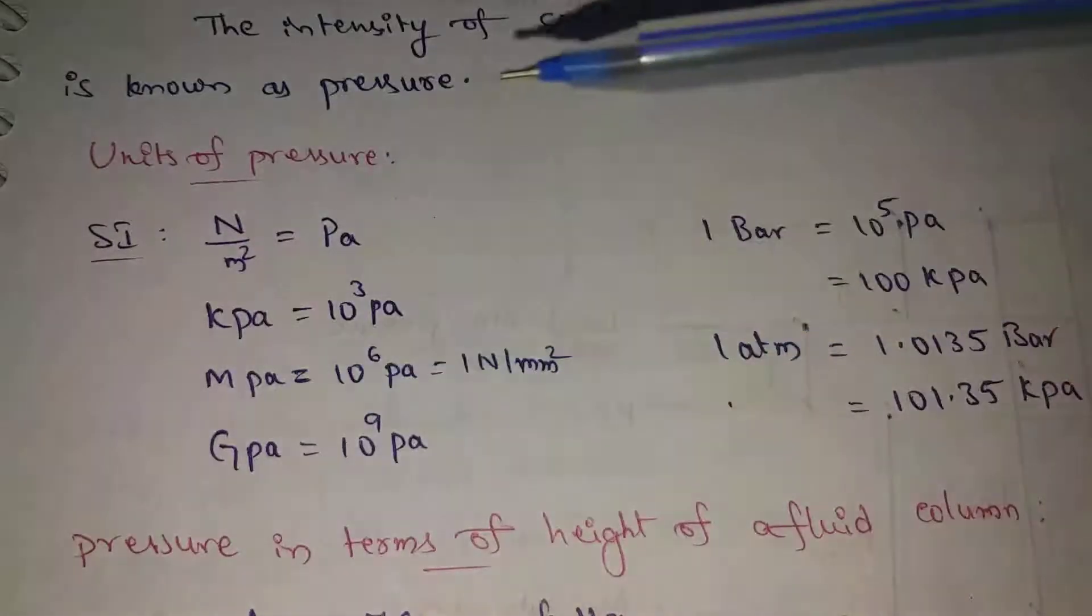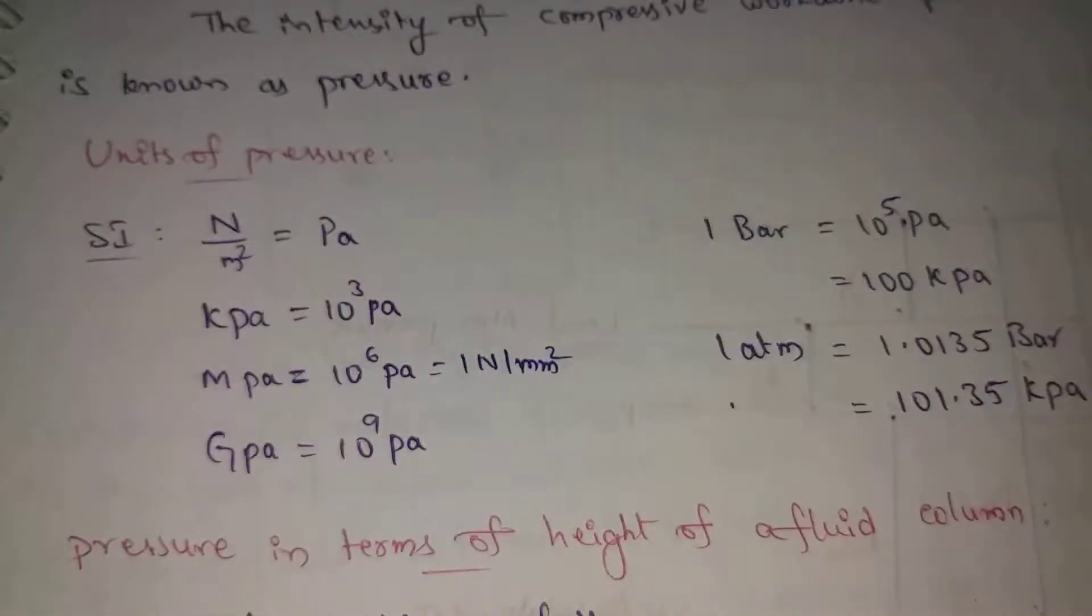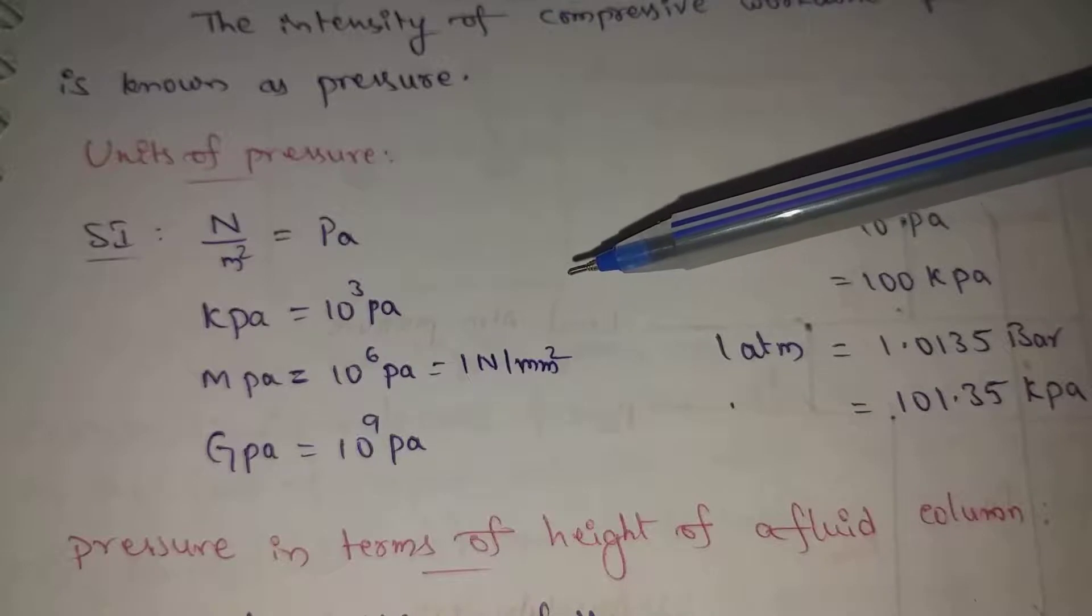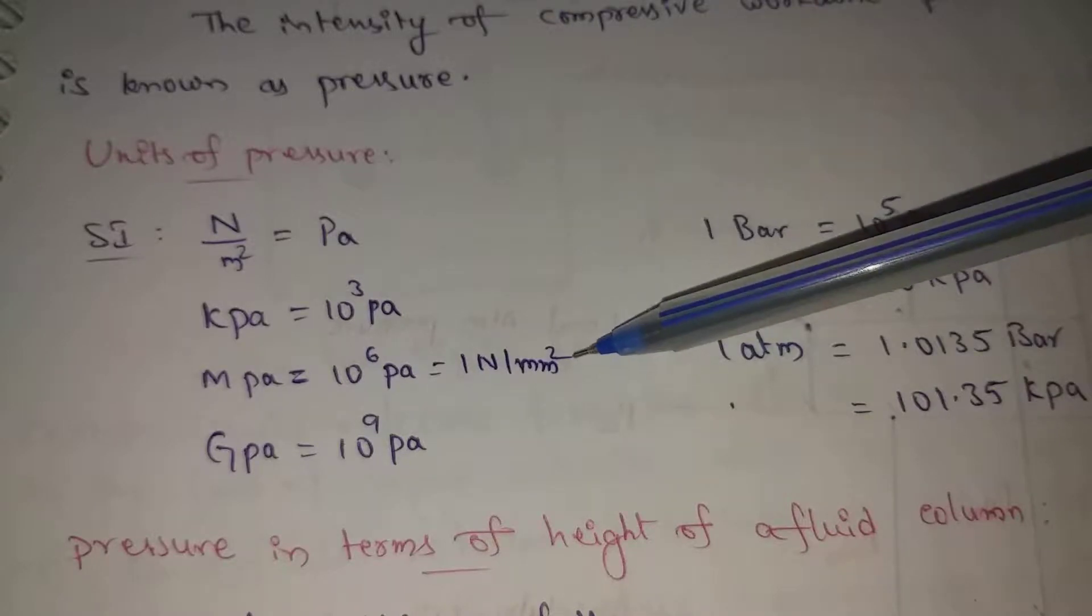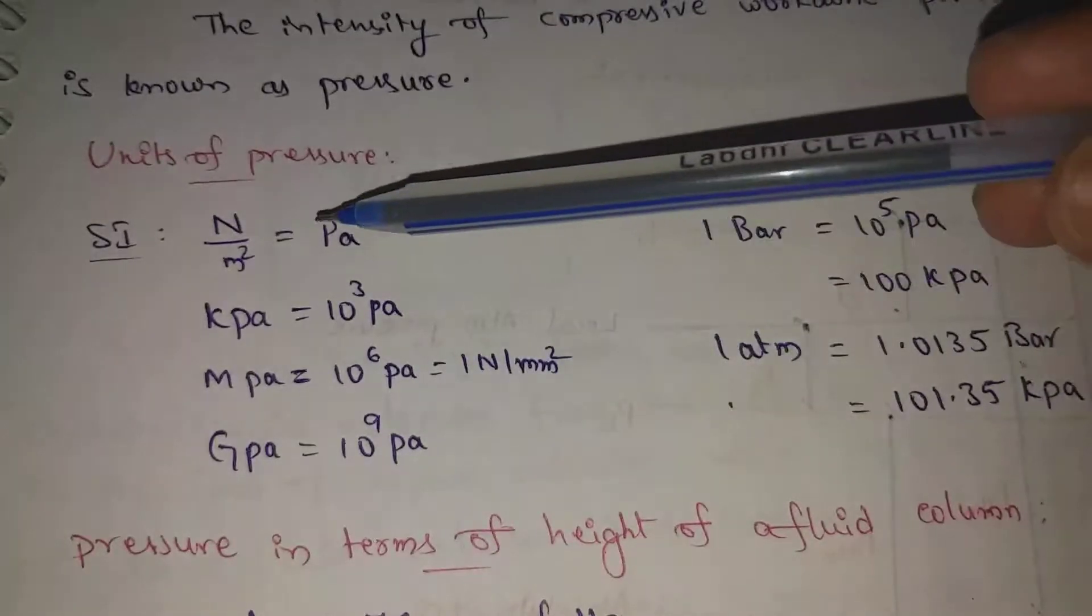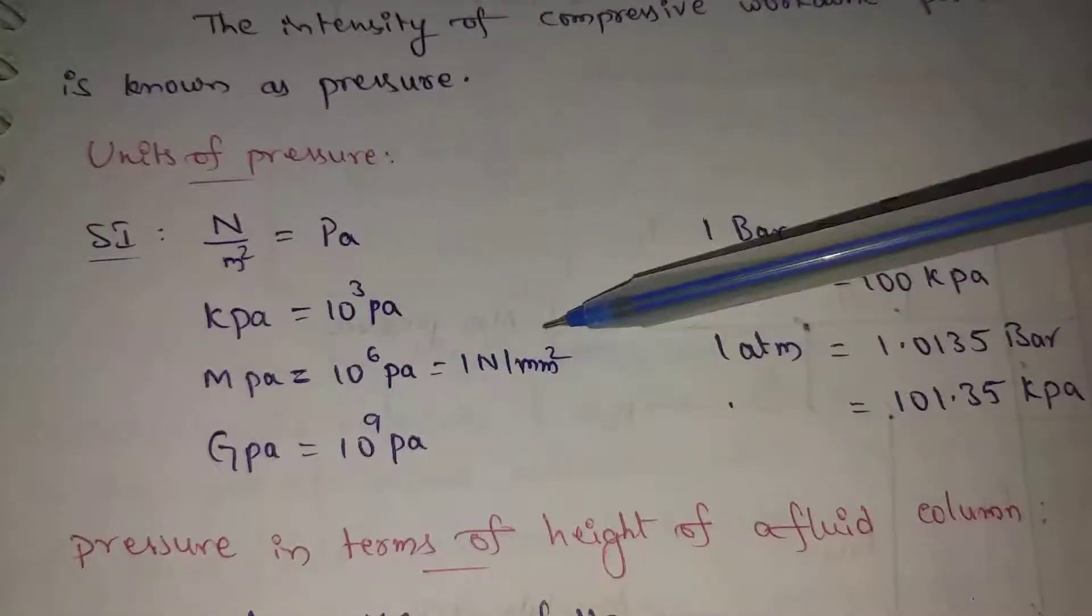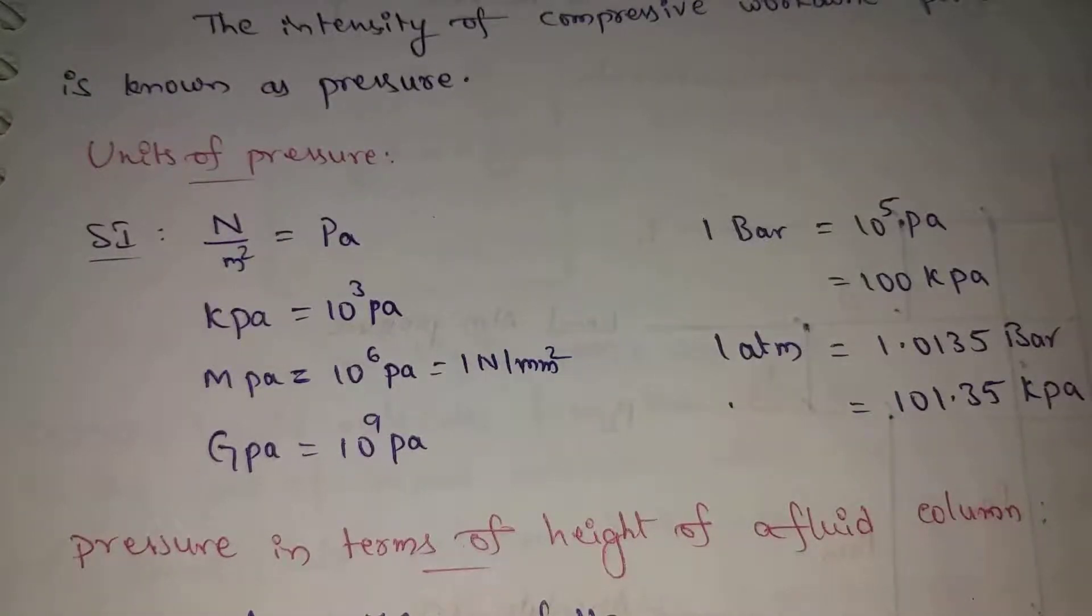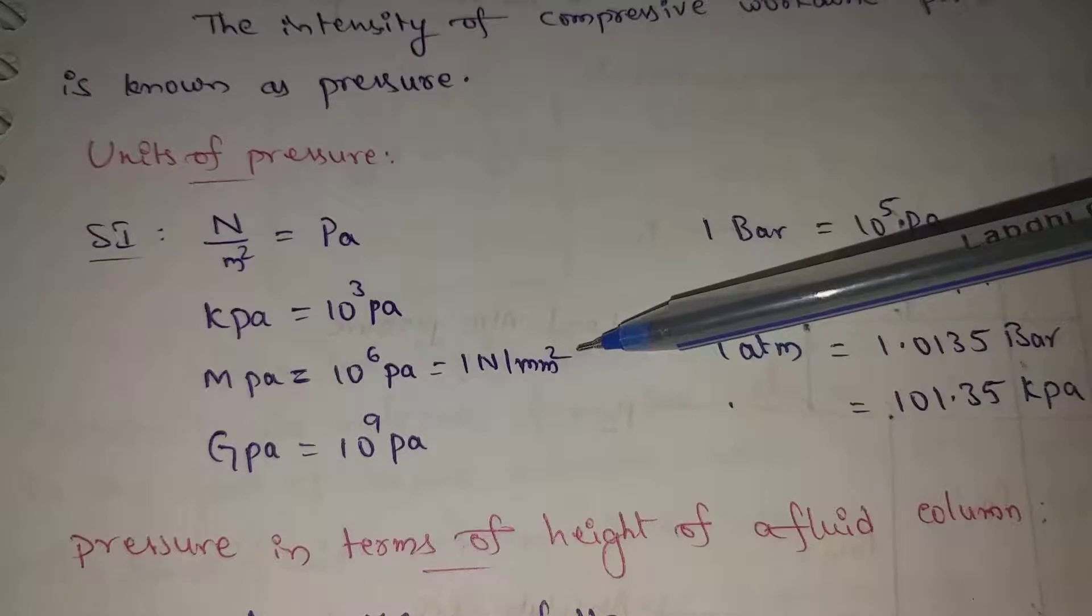MPA, megapascal, is 10 power 6 Pascal. 10 power 6 Pascal equals 1 newton per mm square. Here we are going to convert to mm square. Same, simple, as 1 newton per mm square.